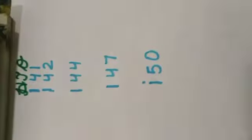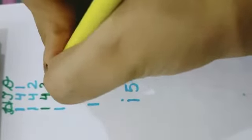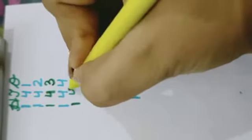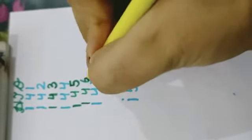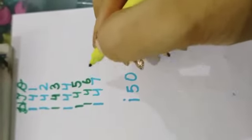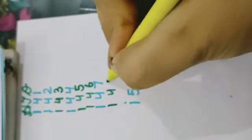Our last column: 141. 142. What comes after 142? 143. 144. What comes after 144? 145. What comes after 145? 146. 147. What comes after 147? 148.